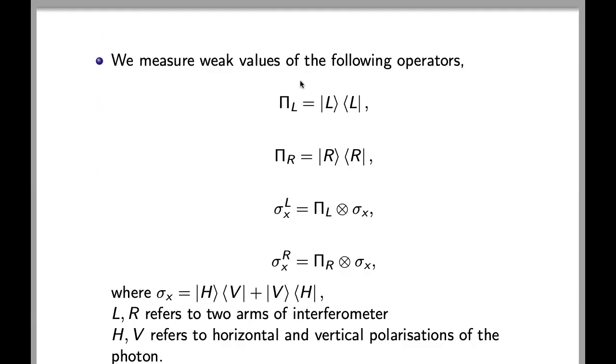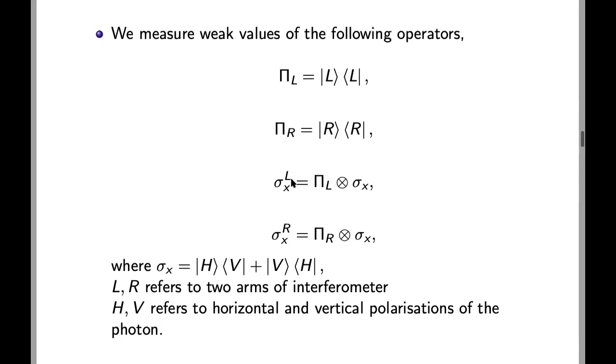We measure the weak value of the following operators. These two operators measure which arm the photon goes through, and these two operators measure which arm the x component of the polarization goes through in the interferometer. And we have sigma x is defined by this, where h and v refers to horizontal and vertical polarization of the photon, and l and r refers to the two arms of the interferometer.